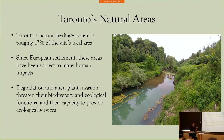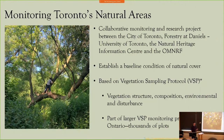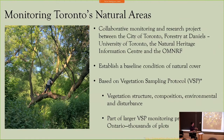This past summer, I had the opportunity to participate in a collaborative monitoring and research project that looked to establish a baseline condition of natural cover within the city of Toronto in order to understand its current condition and to provide a measure against which future monitoring projects could be compared. This study used the vegetation sampling protocol to collect information such as vegetation structure and composition, as well as environmental characteristics and disturbance. It's important to note that this monitoring project contributes to a larger VSP monitoring project across southern Ontario, which now includes close to 7,000 plots.